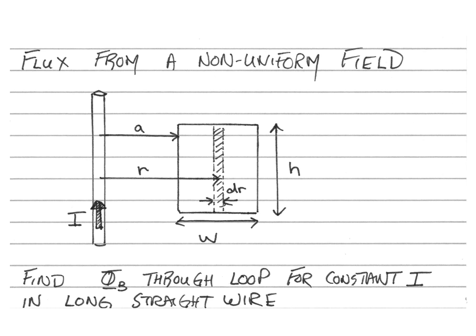And the non-uniform field that we're going to consider is the field that's due to a long straight wire which is going to be residing near this loop.